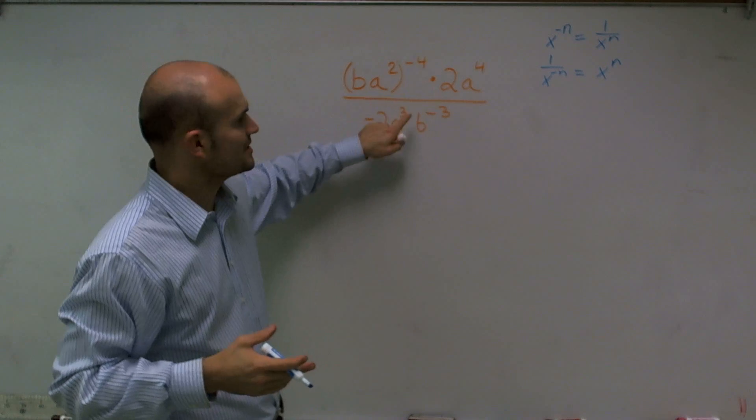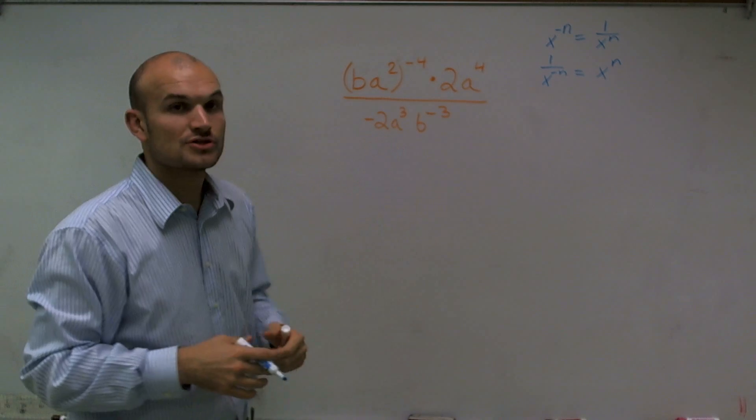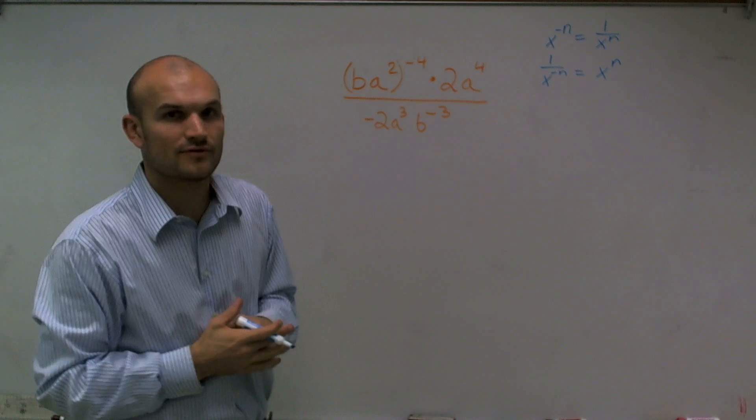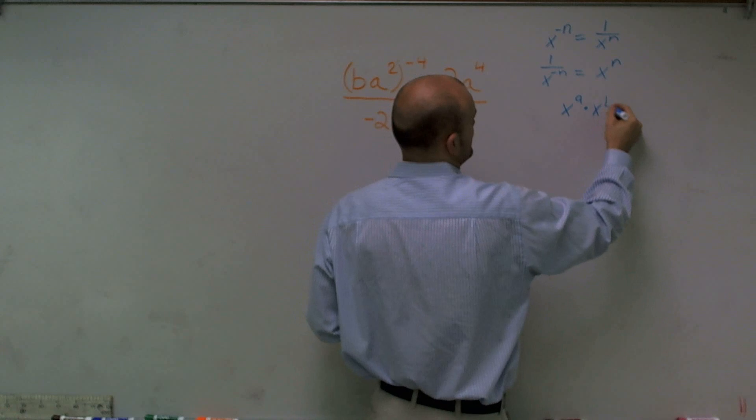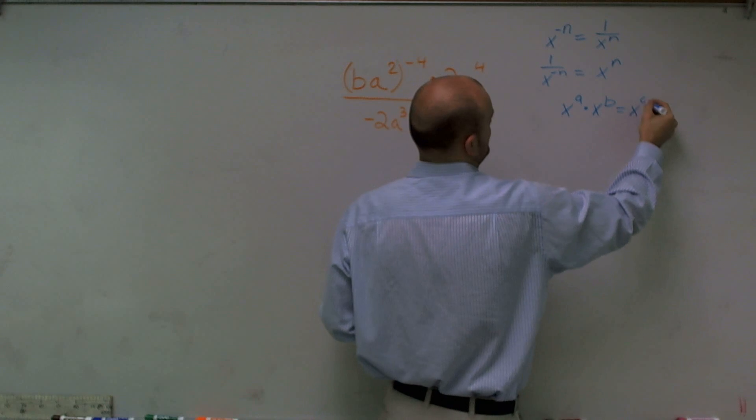The other thing I notice is I have multiplication and division going on in this problem. So we should understand how that's going to affect our problems. Well, if I had x to the a times x to the b,